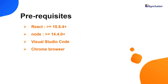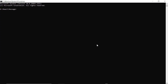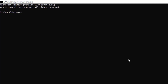Let's start with the application creation process. Make sure you have installed the latest version of React and Node in your system. I'll use VS Code as my editor and show the output in the Chrome browser. Now I'll create a new application in the command prompt using the command npx create-react-app, and provide the app name my-react-app. I set the template script version to TypeScript.